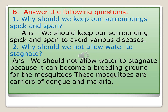Number two: why should we not allow water to stagnate? Stagnate means when a lot of water is lying somewhere continuously. The answer is we should not allow water to stagnate because it can become a breeding ground for mosquitoes. These mosquitoes are carriers of dengue and malaria. If we leave open water lying around — in water coolers, tires, or a broken pitcher — mosquitoes will start breeding in it, causing diseases like chikungunya, dengue, and malaria. That's why we should never allow water to stagnate.